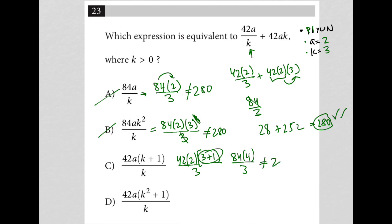So again, that is not equal to 280. So that's gone. And then lastly, we have 42 times 2 times, I'm going to put a bracket here, 3 squared plus 1 all over 3. So this becomes 84 times, 3 squared is 9 plus 1 is 10, so 84 times 10 divided by 3. So I get 84 times 10 is 840, I divide by 3, and what do you know? I get 280. And that's how I would know that choice D is the correct answer.